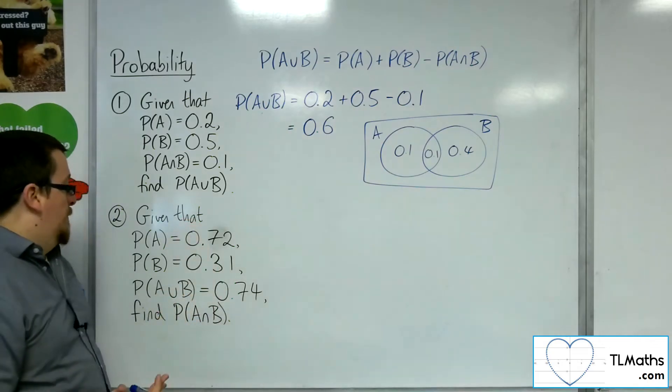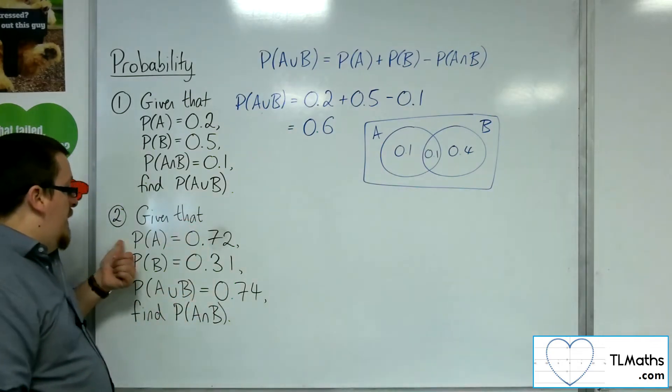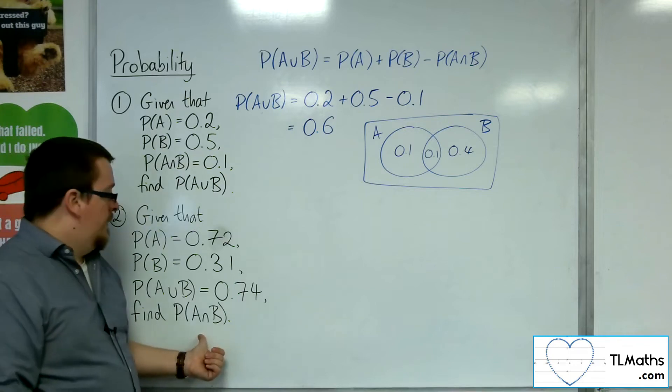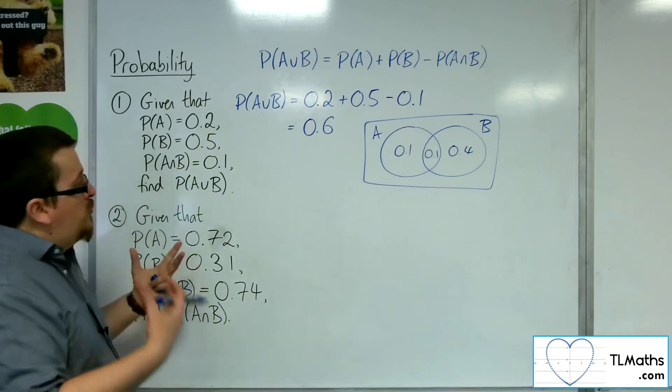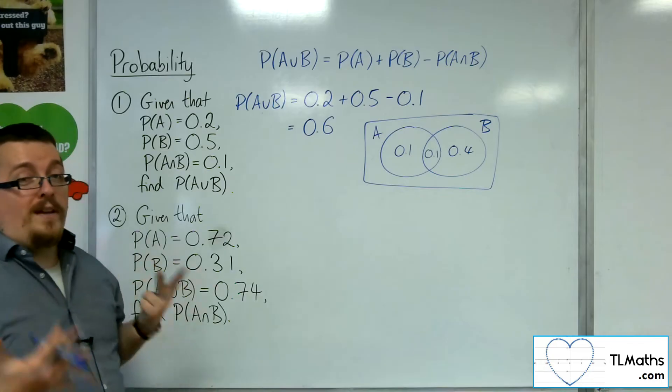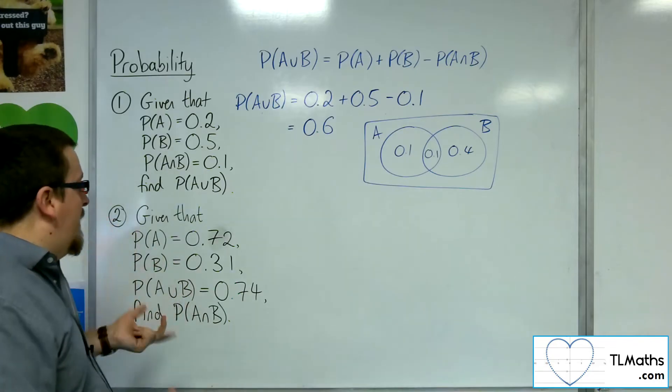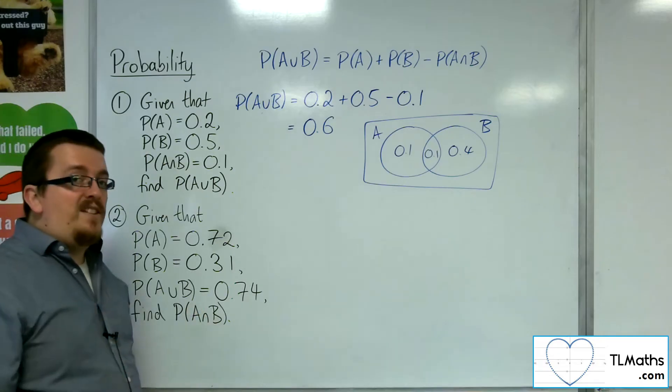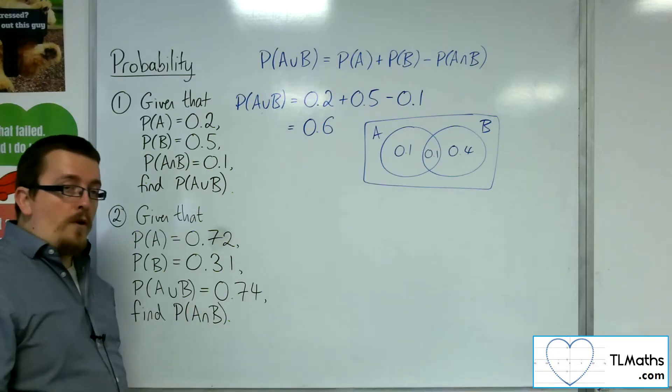Now as for number two, we've been given the probability of A, the probability of B, and the union, but we want to find the intersection. Now in order to draw that as a Venn diagram, that's quite tough. It's not easy to do that. Really, we don't know enough. We need to know that intersection in order to draw it.